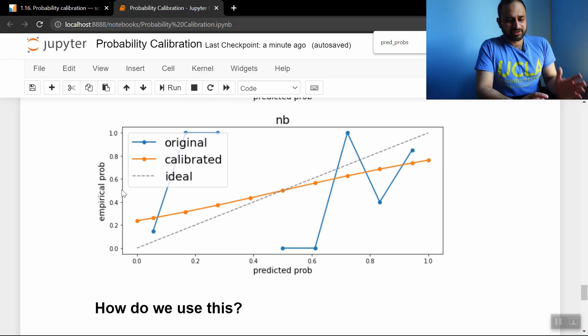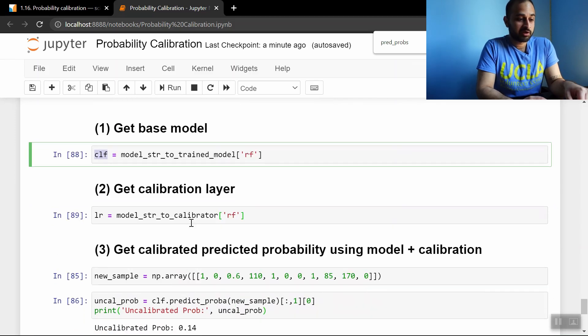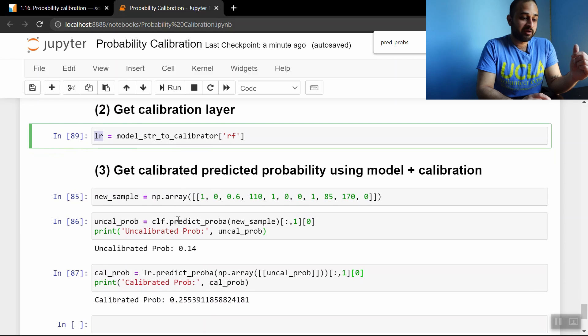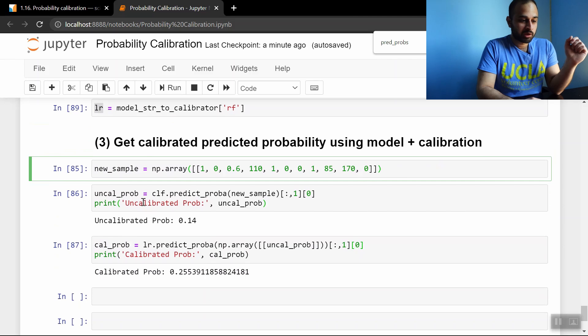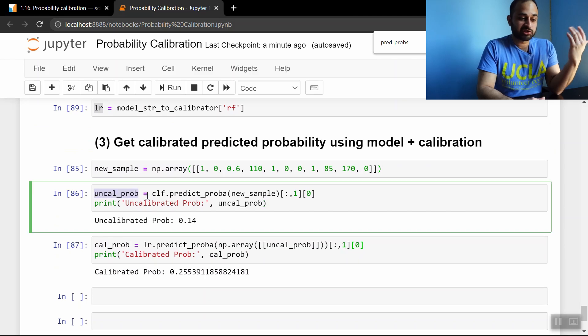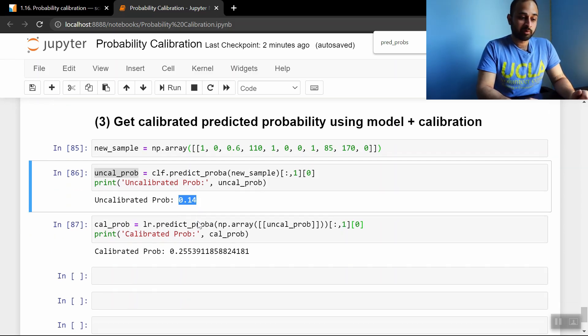So now how do we actually use this? It's just a three-step process. First we get the base model. So here I've chosen to get the random forest classifier, store that in this variable CLF. Then we get the calibration layer for the random forest, store that in this variable called LR for logistic regression. And then we take a new sample. This is just some feature vector that I made up. We get the uncalibrated probability, which is just equivalent to saying random forest classifier dot predict probability on this new sample. And that uncalibrated probability is 0.14. So if we didn't do any calibration, we would naively think that this sample has a 14% chance of having heart disease, which is the target variable here.